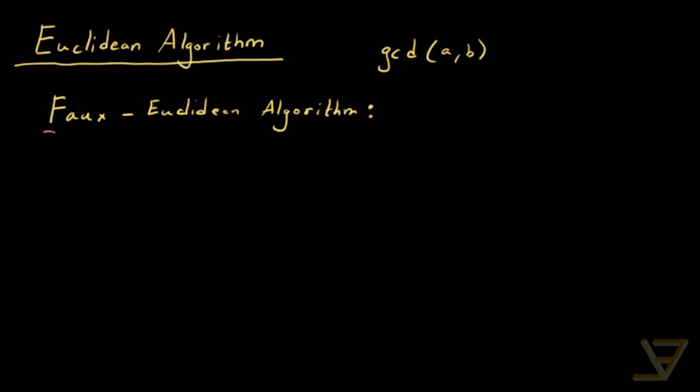which I like to call the Faux-Euclidean algorithm because it's not exactly the Euclidean algorithm, but you can derive the Euclidean algorithm from it. A lot of times this version, which I'm going to explain in just a moment, people call it the Euclidean algorithm since it's so important in itself.